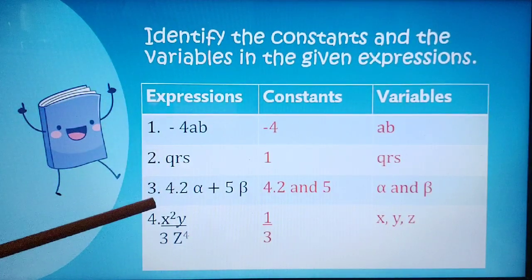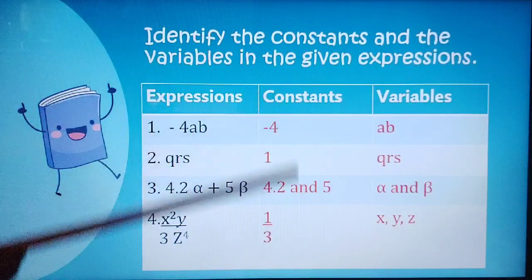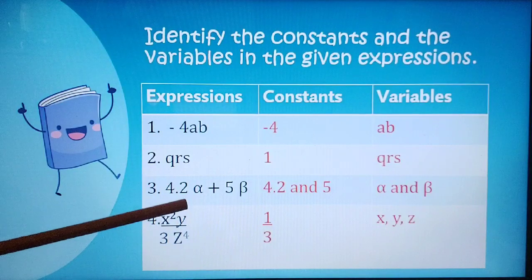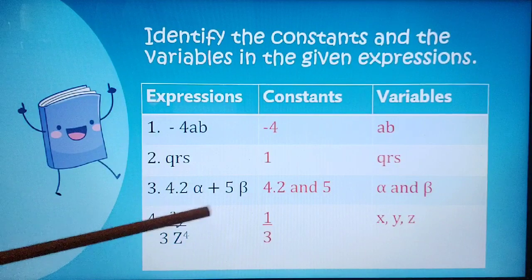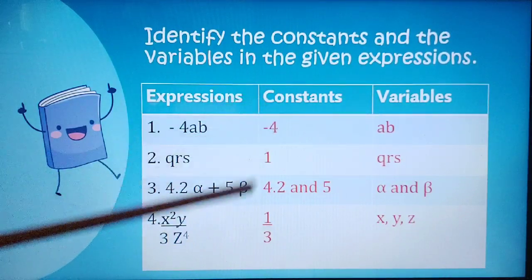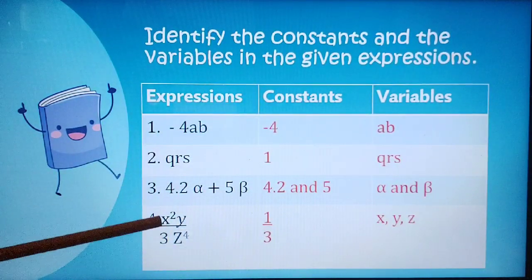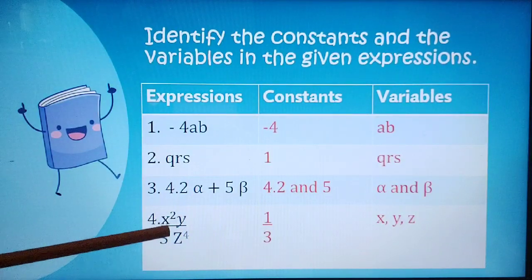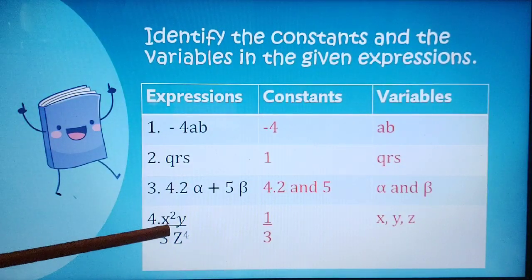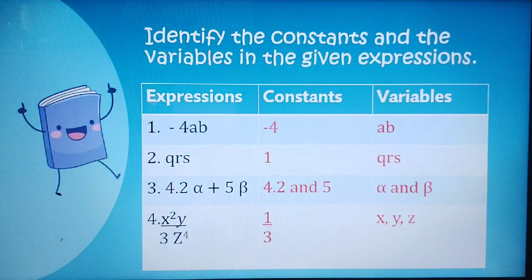For number 3, the constants are the numbers given, so 4.2 and 5 are the constants, while the variables are Alpha and Beta. For number 4, the constant is 1 third — if there's no number on top, it automatically becomes 1, so it's 1 third. And then the variables are X, Y, and Z.